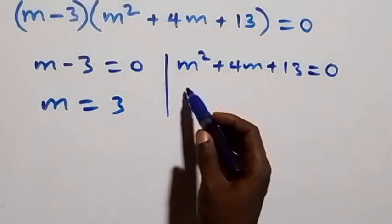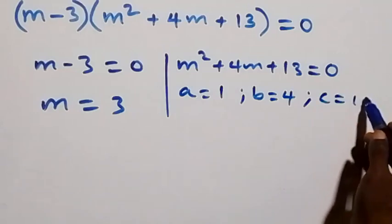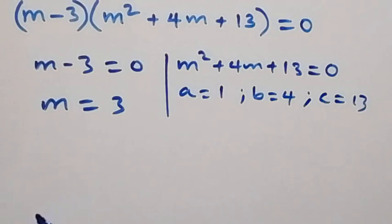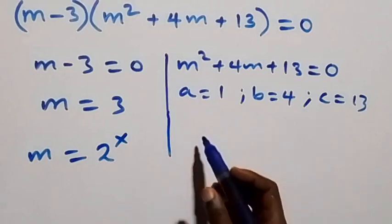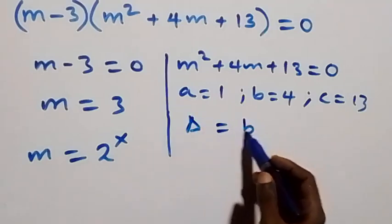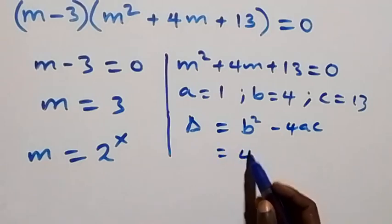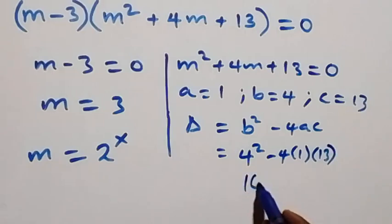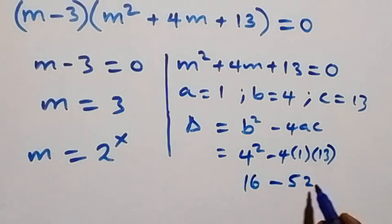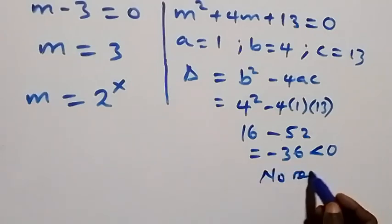For the second case, we have a quadratic where a equals 1, b equals 4, and c equals 13. Since m was defined as 2 raised to power x, we check for real solutions using the discriminant: b squared minus 4ac equals 4 squared minus 4 times 1 times 13, which is 16 minus 52, equals negative 36. Since this is less than zero, there is no real solution on this side.